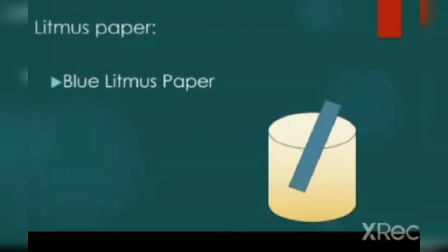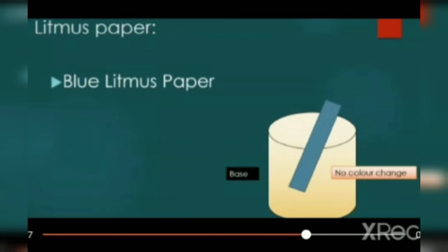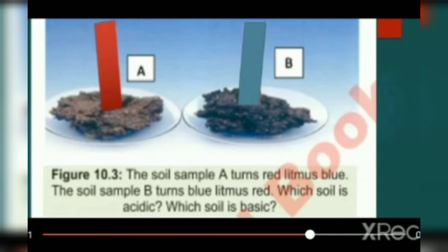Now blue litmus paper. Dip in an unknown solution. If it turns red, it means it is acidic. If it is base, there will be no color change. Figure 10.3 - the soil sample is given. Sample A turns red litmus blue. Sample B turns blue litmus red. The soil is acidic.